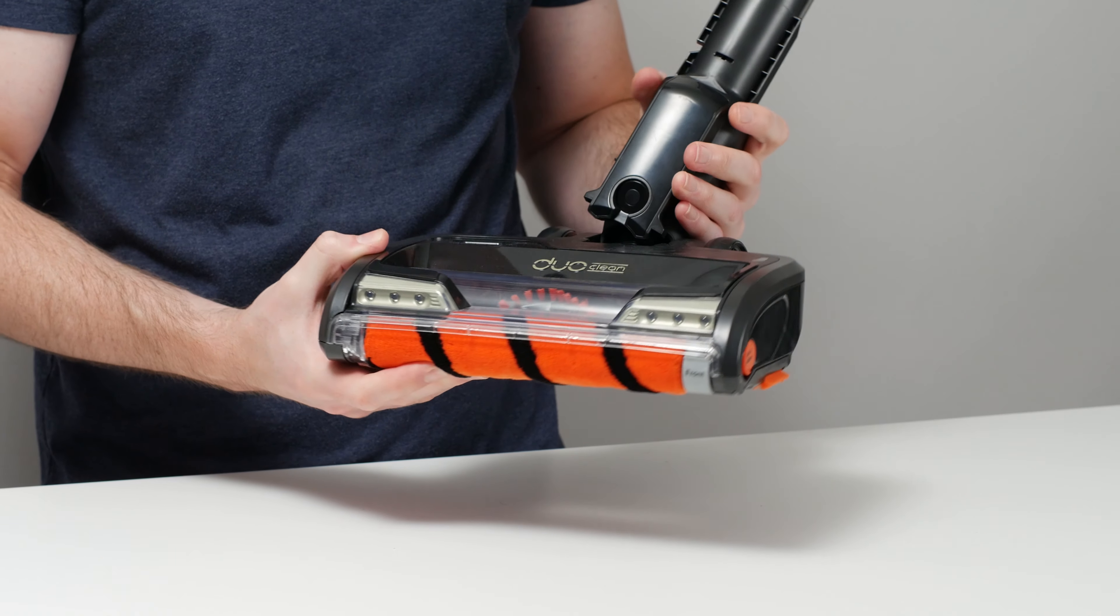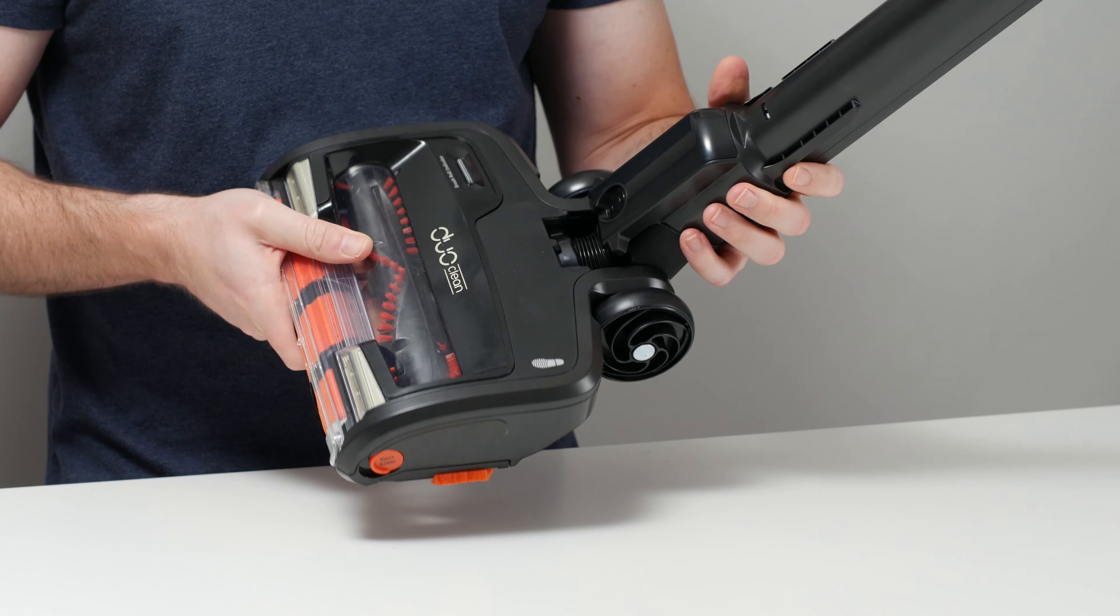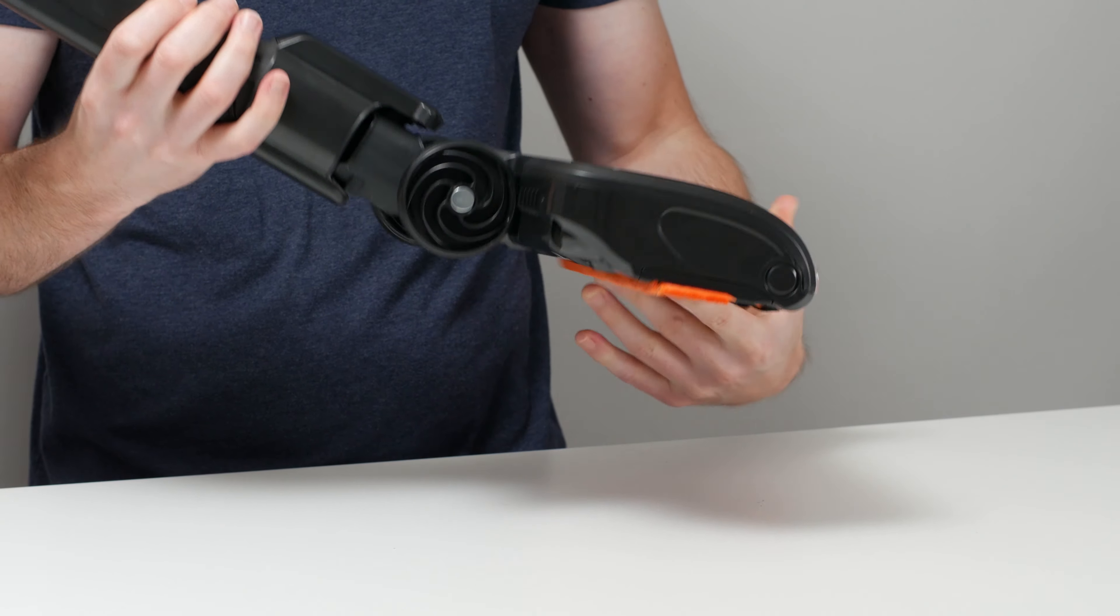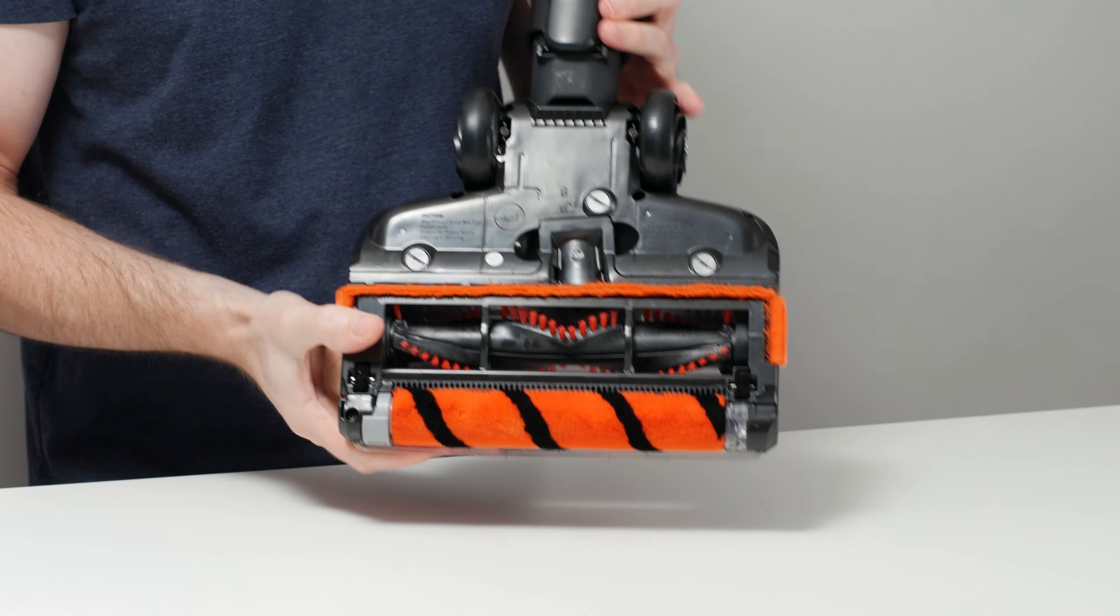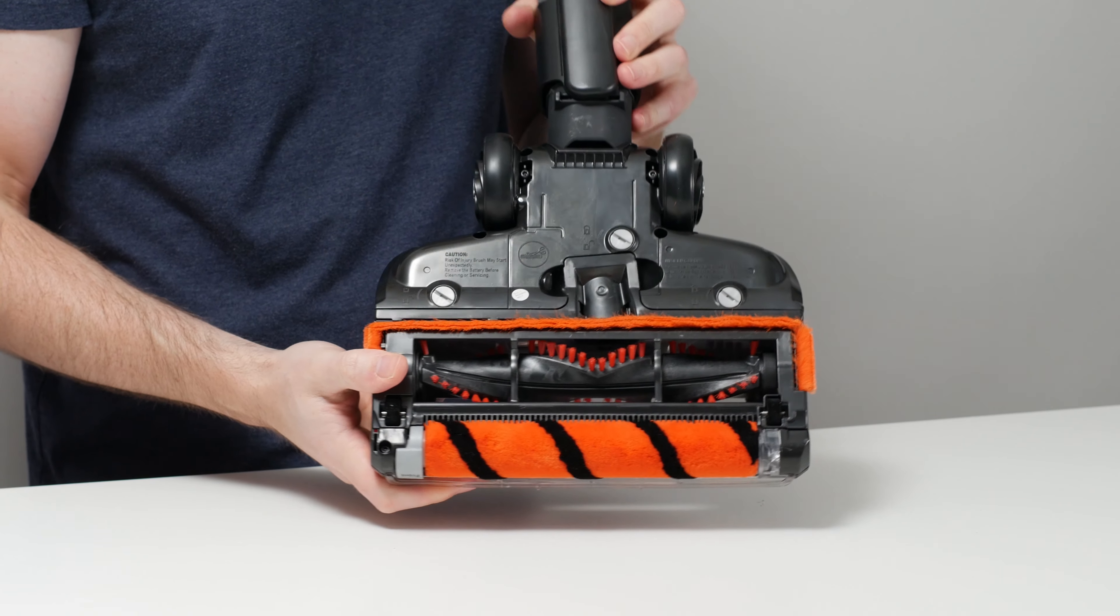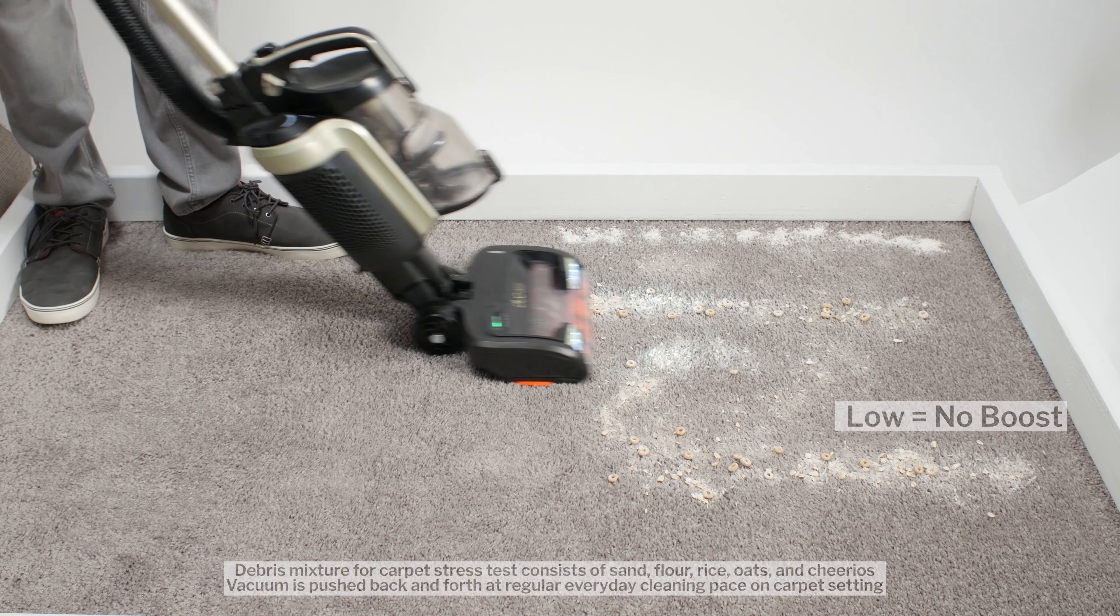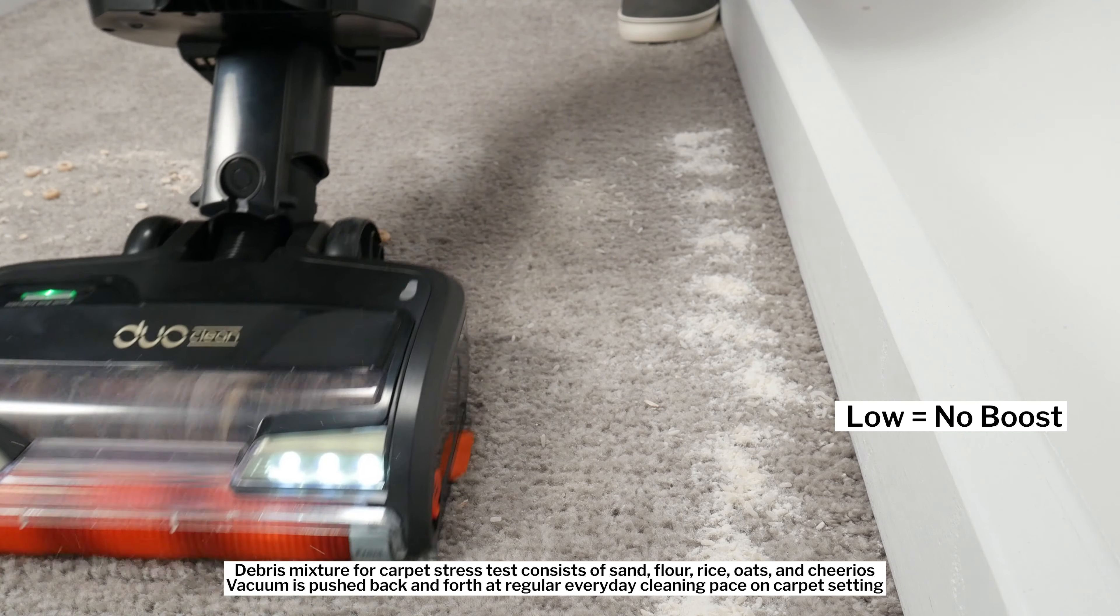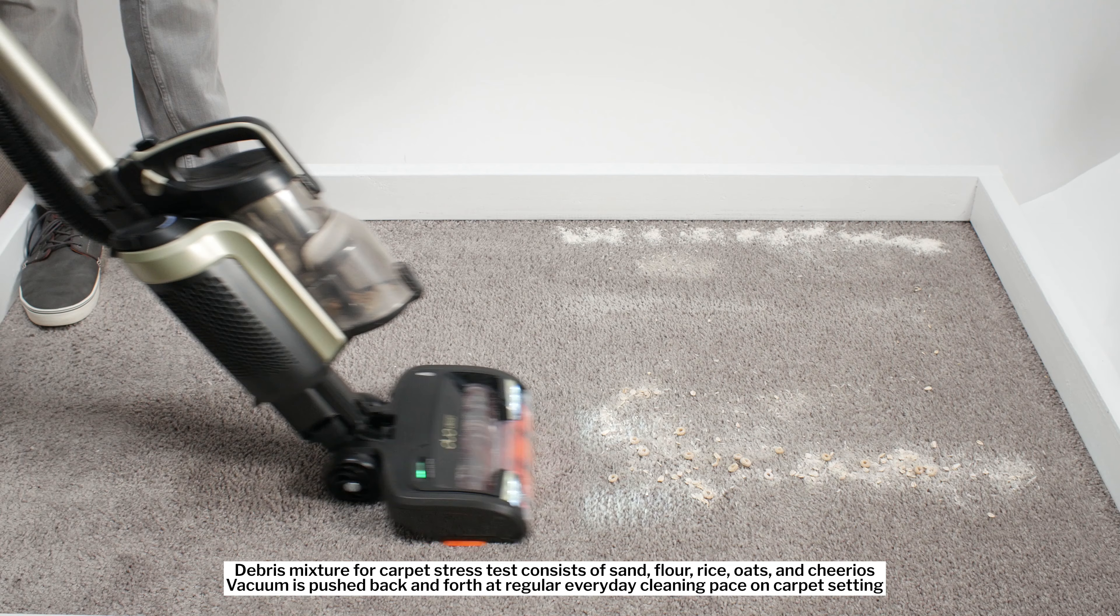Moving on to carpet cleaning performance, we first have to talk about the P50's DuoClean cleaner head. The DuoClean head has two brush rolls: a standard brush roll for agitating carpet and a soft roller for picking up large debris. Because of this design, the Ion P50 picked up large debris on carpet very well, better than most other cordless vacuums we tested.